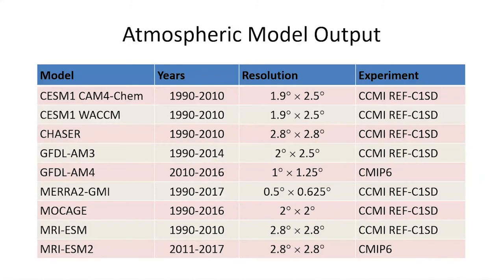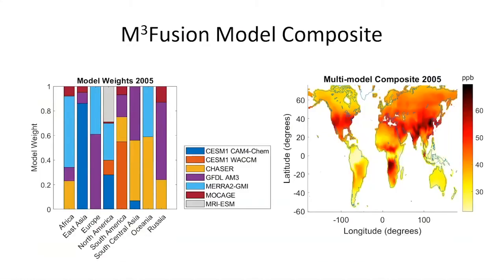We also incorporated atmospheric model outputs. We used nine models, most from CCMI — seven over the 1990–2010 period, with fewer models available in later years. Hourly output from each was processed to the same ozone metric, the OSDMA8, then combined using the M3 fusion method. This creates a multimodel composite using a linear combination of models with weights that minimize mean square error by region and year — showing for 2005 each of the eight regions, the model weights, and the resulting composite.